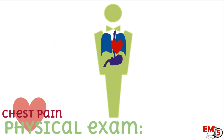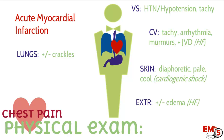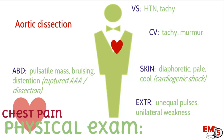Now let's move on to the physical exam. For acute MI, patients whose skin is diaphoretic, pale, and cool are the ones I'm worried about. You might also see signs of hypertension and heart failure such as JVD, leg edema, and crackles in the lungs. For aortic dissection, always check for unequal pulses in the extremities and any unilateral weakness — either of those findings and I'm very concerned about aortic dissection.